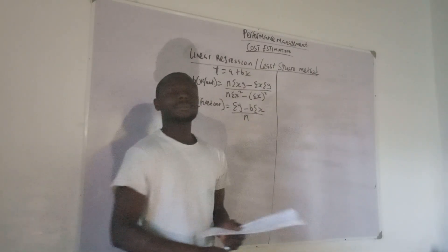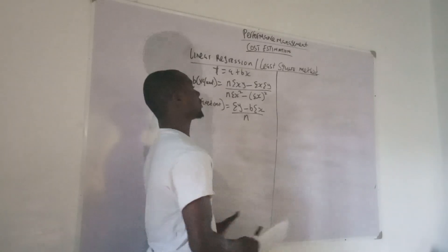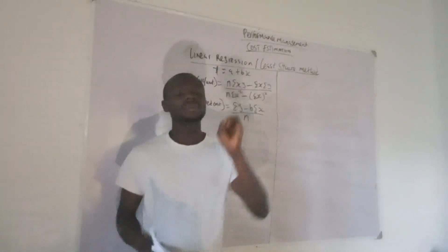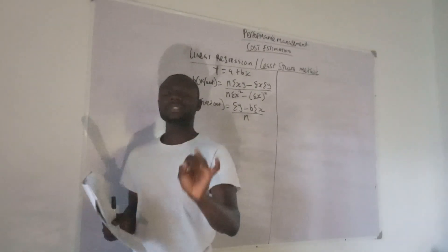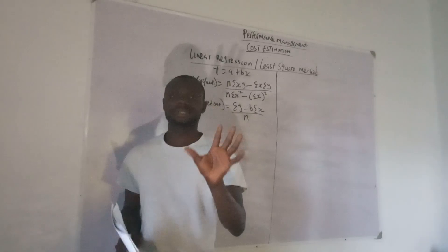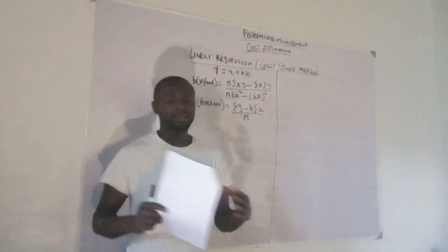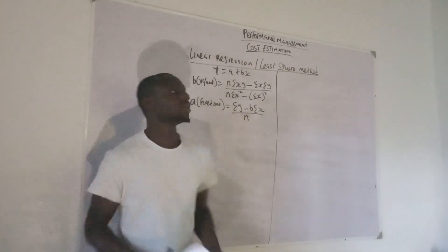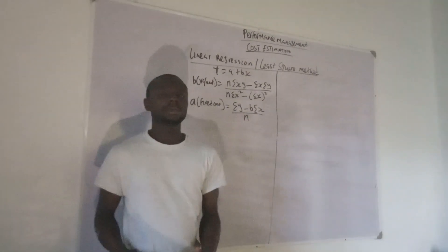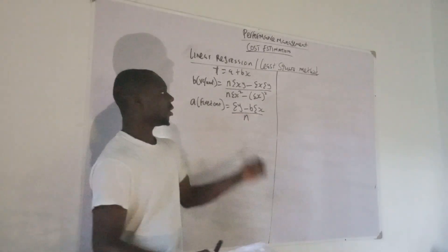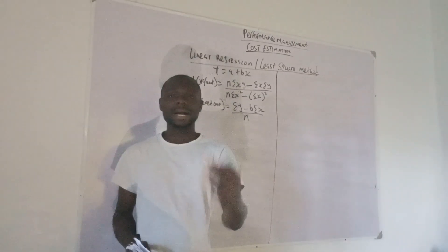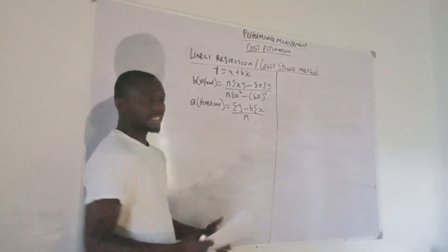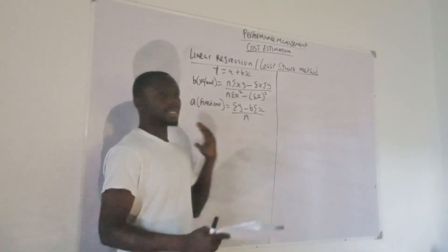We're looking at separating variable costs as well as fixed costs. Don't forget that when a cost has both variable costs and fixed costs, it's called a mixed cost. When you want to separate your mixed cost into fixed and variable components, you can use the high-low method, linear regression, accounting analysis, engineering analysis, or a scatter diagram.